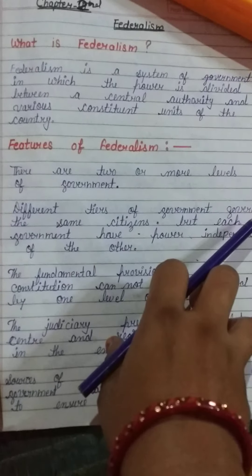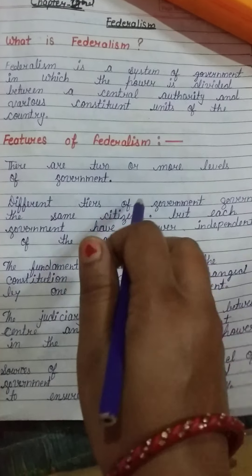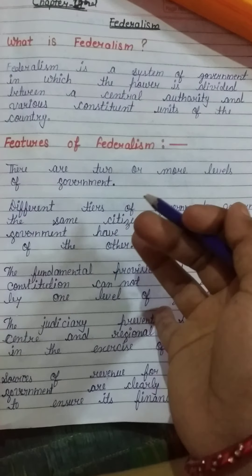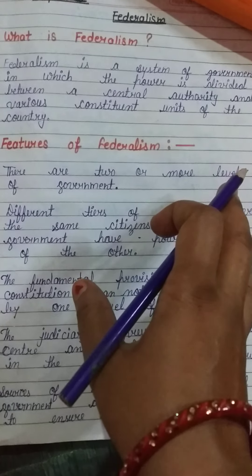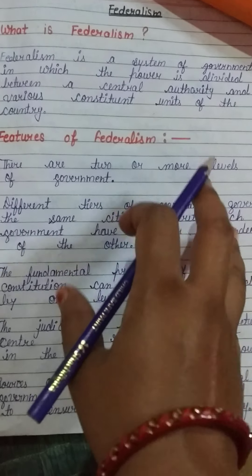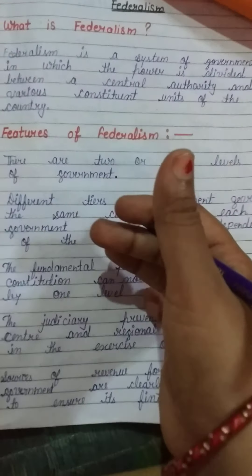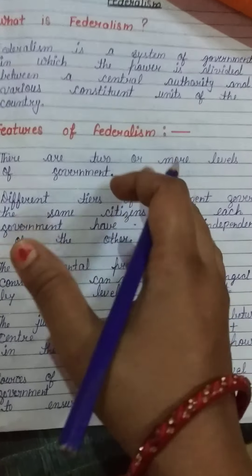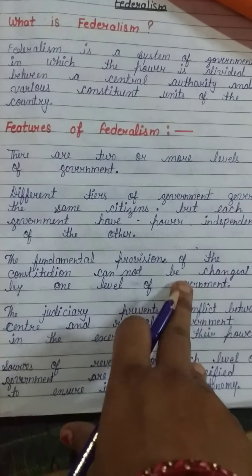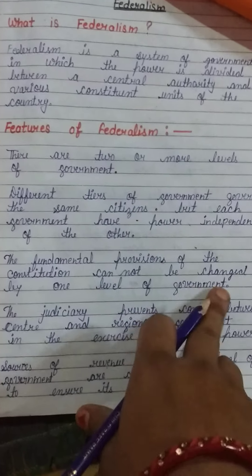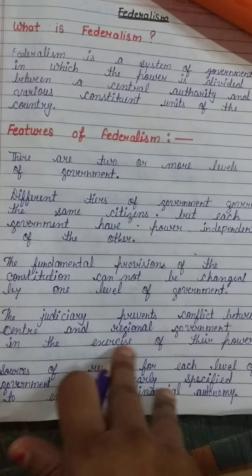The same citizens are governed independently by both the central government and the state government. The central government runs the whole country, while the state government operates at the state level. The fundamental provisions of the constitution cannot be changed by one level of government, and the judiciary prevents conflict between the central and regional governments in the exercise of their powers.